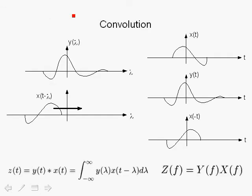A quick review of convolution is in order before we derive relationships for cross-correlation. Given signals x(t) and y(t), convolution z(t) is expressed through an integral relationship over lambda. Setting t equal to zero gives y(lambda) times x of minus lambda, so we're multiplying y(t) times x(−t) and integrating. The function x(−t) is just the mirror image of x(t) — for example, a point at a positive time maps to negative time, producing a mirrored curve.